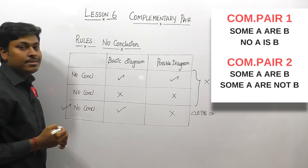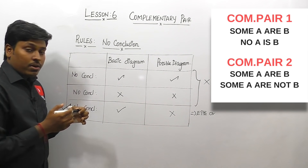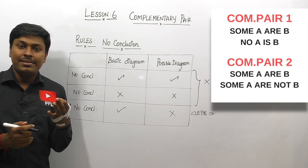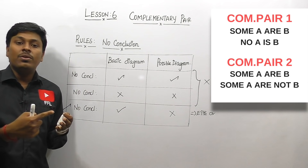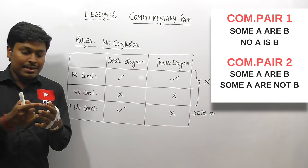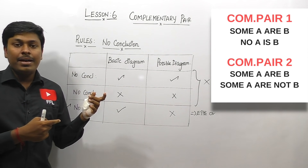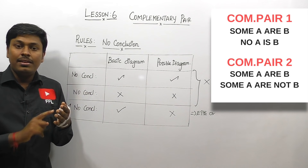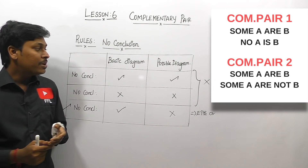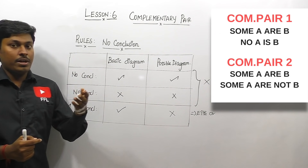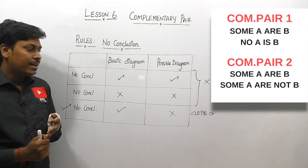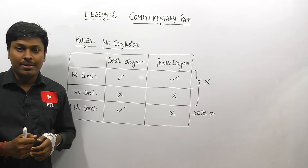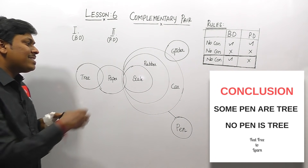Now we are going to solve five different questions based on this complementary pair. In the first three questions the answer is 'either or', and I will explain why. In the last two questions, even though it is a complementary pair, we will not use 'either or'. Syllogism is one of the most important topics for upcoming IBPS, SBI PO, and clerk exams, so understand the logic of the 'either or' concept clearly.